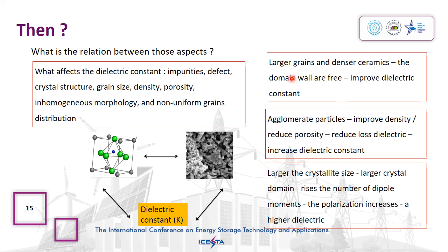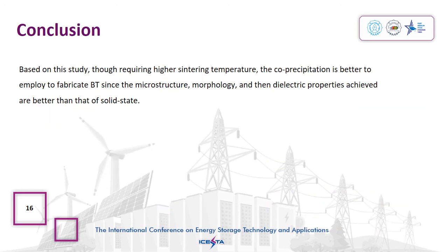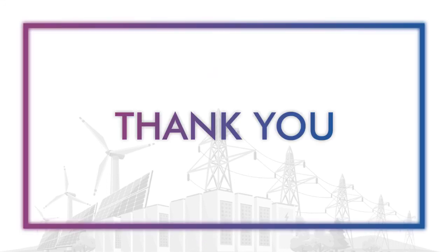Moreover, less porosity could reduce dielectric loss, indicating an improvement in dielectric quality. Thus, based on this study, we can conclude that co-precipitation, even though it requires a higher sintering temperature to obtain pure BT, is the better method to fabricate BT since the microstructure, morphology, and dielectric constant obtained are better than those of solid state reaction. Thank you everyone.